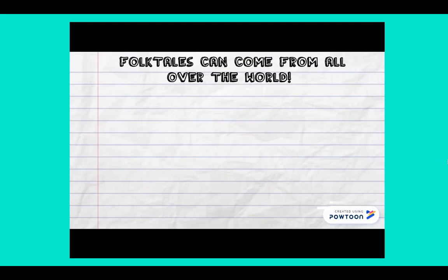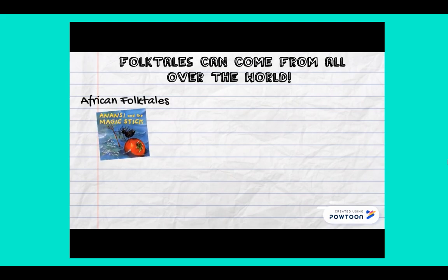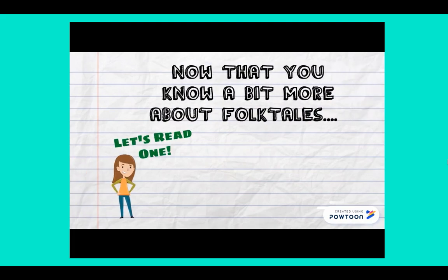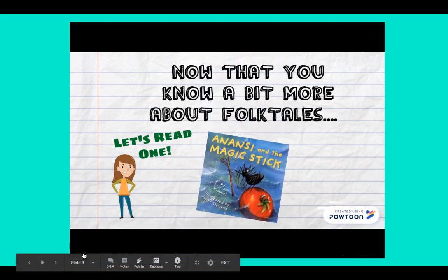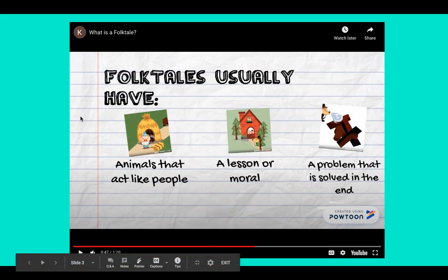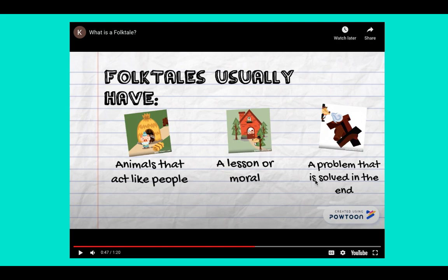Folktales can come from all over the world — there are African folktales, Chinese folktales, Native American folktales, and even Latin folktales. So, friends, just like it's said here, folktales have three parts: animals that act like people, a lesson or a moral, and a problem that is solved in the end. This is a folktale because they have animals talking like people, we learn something from it, and they solve something from it.